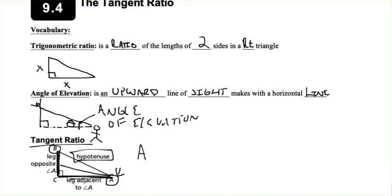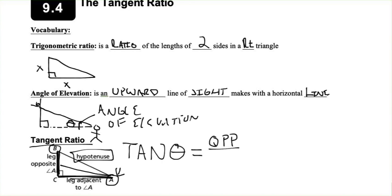The tangent of any angle — tangent of theta, where theta is just a fancy way of saying 'angle' — is the opposite side over the adjacent side. That is the tangent function.